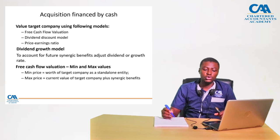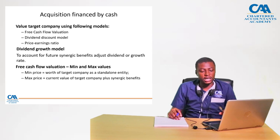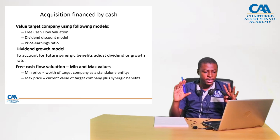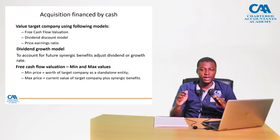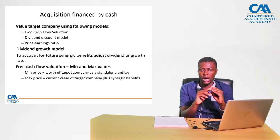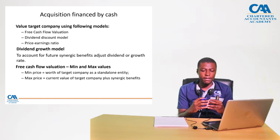If you are looking at the free cash flow valuation method, it can give you the minimum and maximum values. The minimum price is equivalent to the worth of the target company as a standalone entity — how much is it worth if we value it separately? The maximum value is the current value of the target company plus any synergistic benefits.